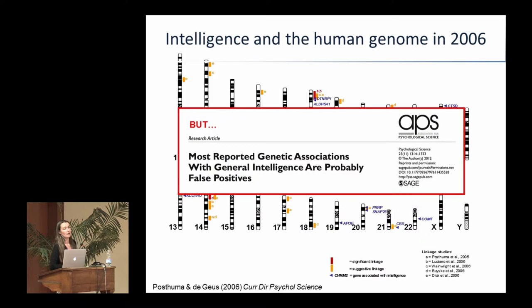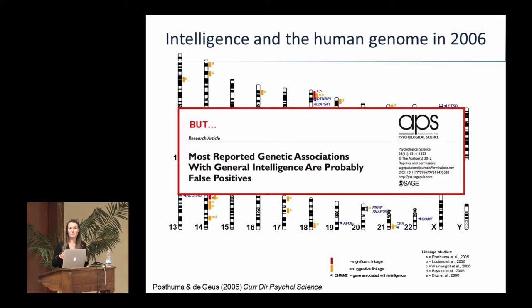A paper was published where the authors looked at all the genetic associations from candidate genes with IQ and concluded that most of the reported associations are probably false. I tend to agree with that — including my own study. We were very lucky to find something significant, but it was probably due to the winner's curse. This occurs when you have a relatively small sample and a large effect happens to be significant, but the real effect is probably much smaller or maybe non-existent. We learned that we need larger samples.